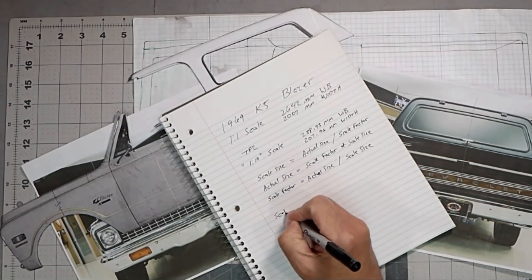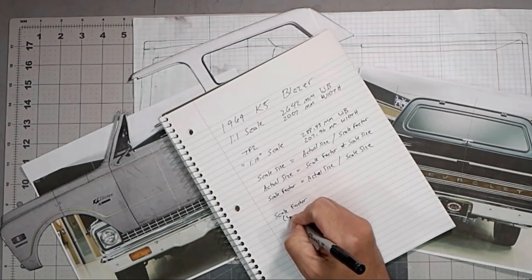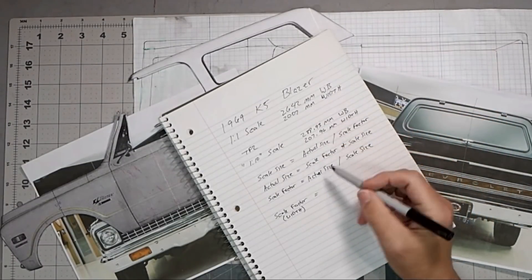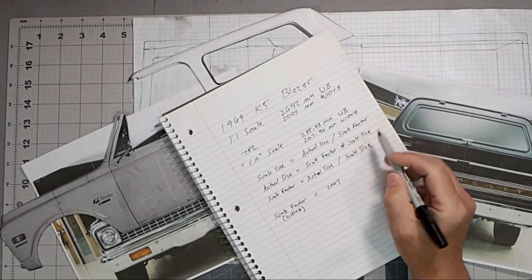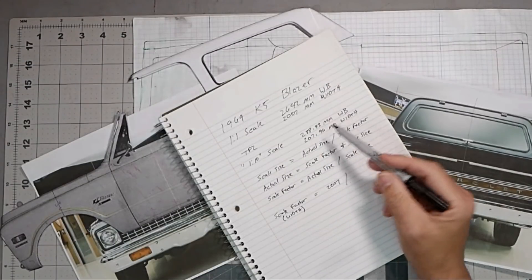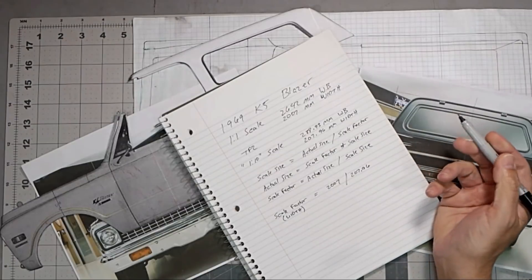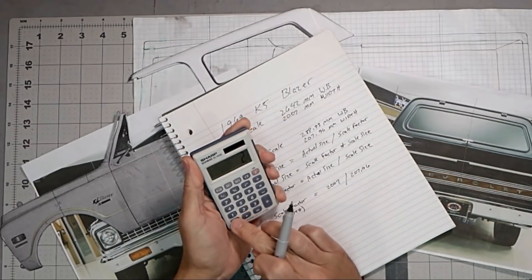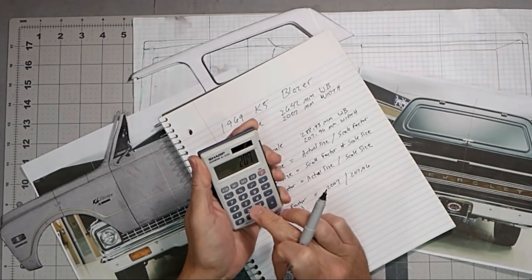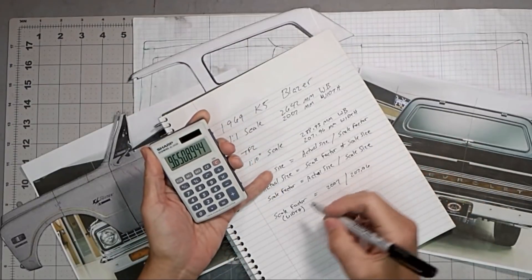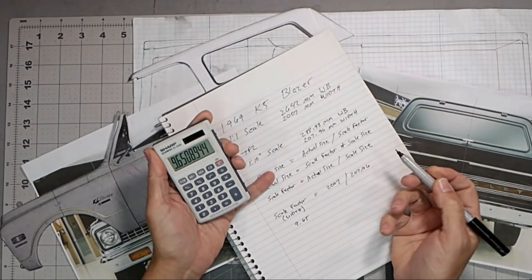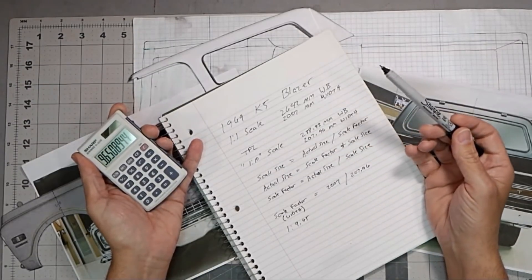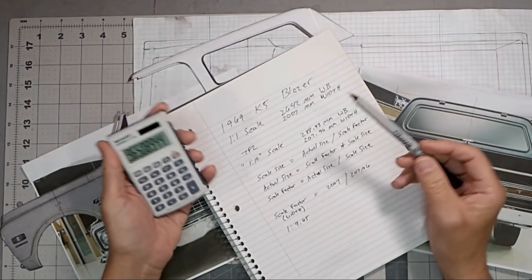So you have the scale factor here. And this is for the width. And so the scale factor is the actual size, so 2007, divided by the scale size which is 207.96. And so when you get your calculator out, 2007 divided by 207.96, you come up with 9.65. So essentially the scale factor is 1 to 9.65. So as you can see it's going to be a little bit smaller than 1 tenth, or the factor is anyway, which will actually make it a little bit bigger truck.